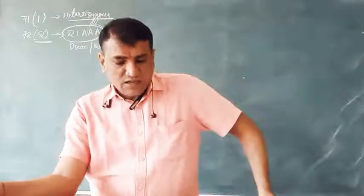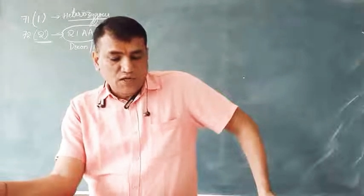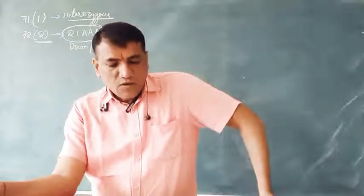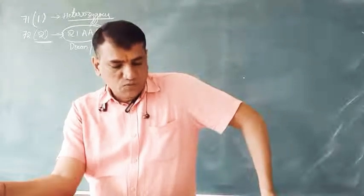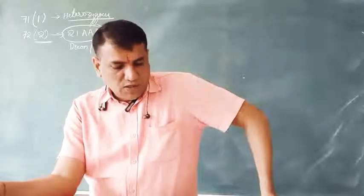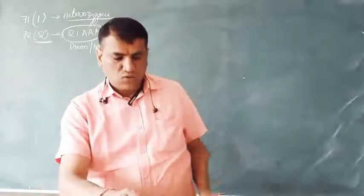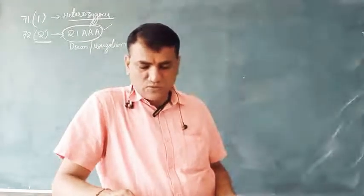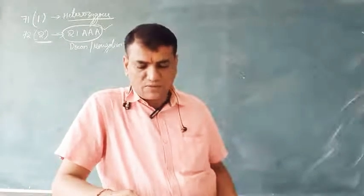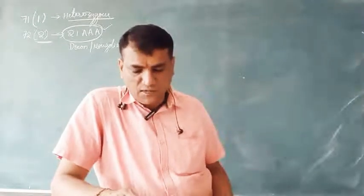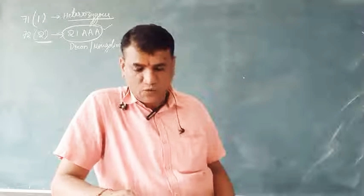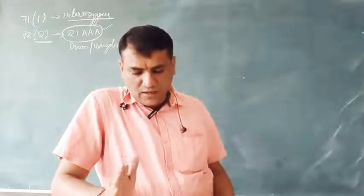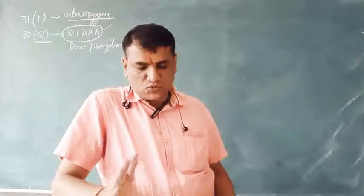Question 102: Turner's syndrome shows 44 autosomes plus 1 X chromosome (total 45 chromosomes). It is not 44 chromosomes total, not 45 autosomes, not 47 chromosomes. The correct answer is none of these standard options because Turner syndrome is 44 autosomes + 1 X chromosome = 45 chromosomes total.